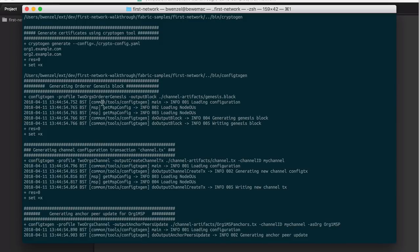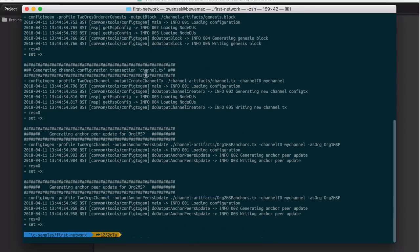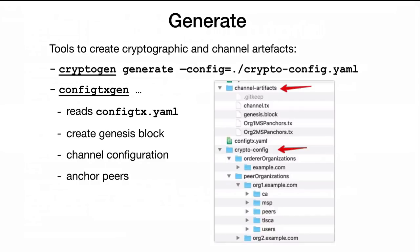In the next step we use the configtxgen tool. In the first step we create the so-called genesis block, which is the first block in the Hyperledger blockchain. Then we define a channel so the peers can communicate with each other, and then we specify two anchor peers, one for each organization. The cryptogen creates the crypto-config folder, and configtxgen creates the channel-artifacts folder. Here we can see the binary files for the genesis block, channels, and anchors, as well as certificates, private keys, and all the material we need to communicate in the Hyperledger Fabric blockchain.